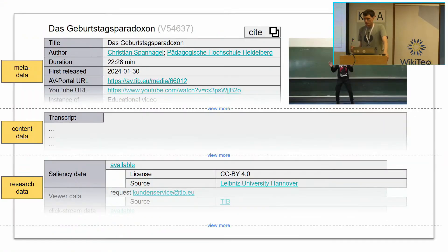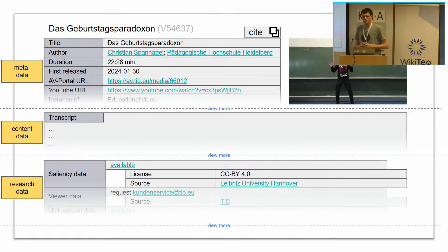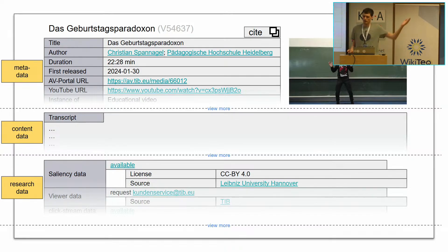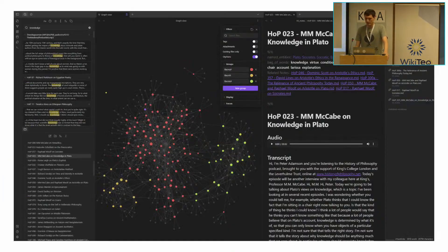My approach is to take all the data that is already out there and start curating it in something looking similar to this. And then also approach the people and say, 'Here, we can highlight your data, but it would be even better if you put a license on this.' So we just be the middleman between the open educational resource space and the people who are actually putting out the videos. And this is, for people who have worked with Obsidian, one way how this could look.